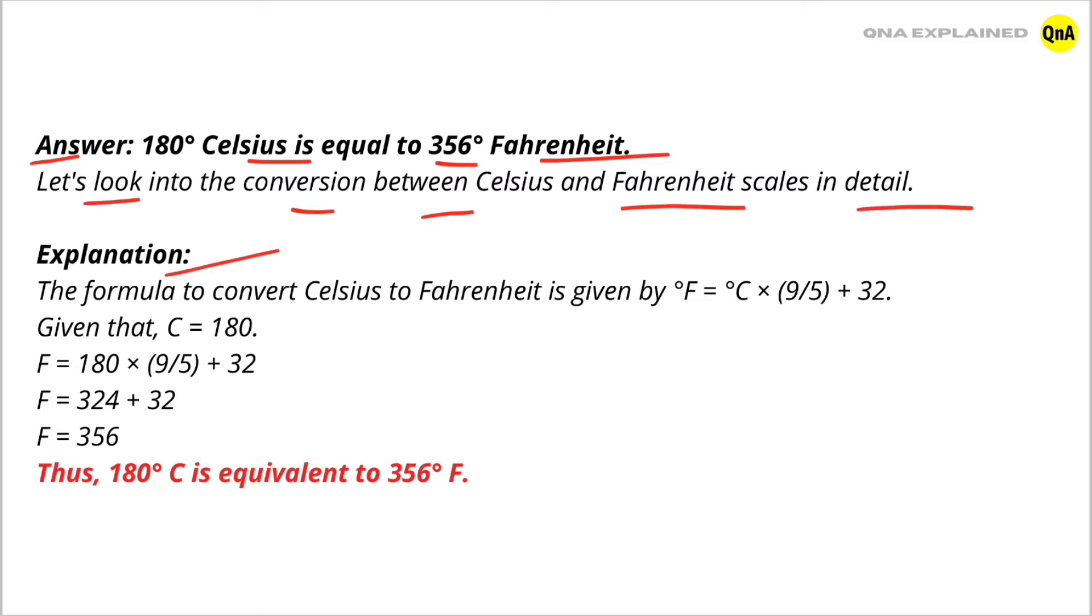Explanation: The formula to convert Celsius to Fahrenheit is given by F = C × (9/5) + 32. Given that C = 180, put the value of Celsius in this formula: F = 180 × (9/5) + 32.